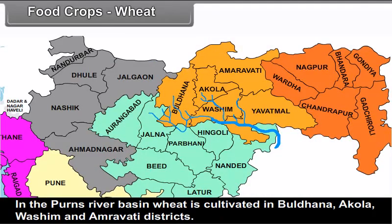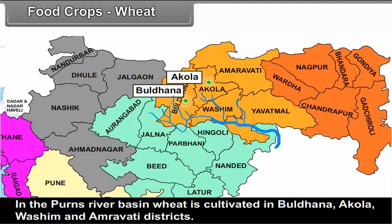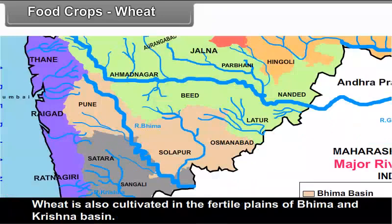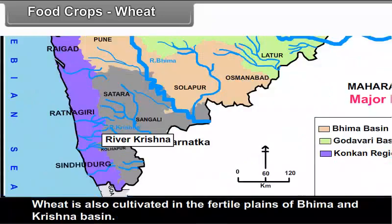In the Purna river basin, wheat is cultivated in Buldhana, Akola, Washim, and Amravati districts. Wheat is also cultivated in the fertile plains of the Bhima and Krishna basin.